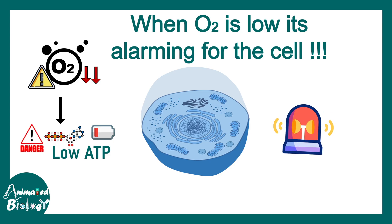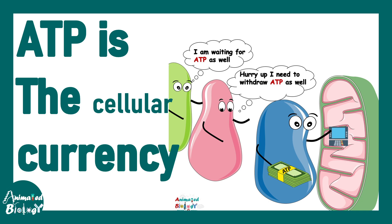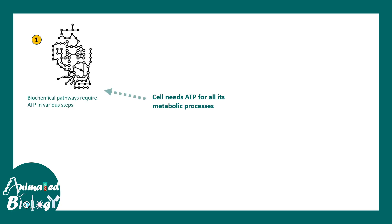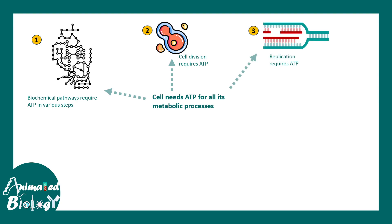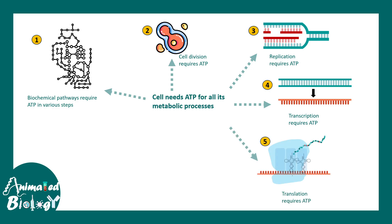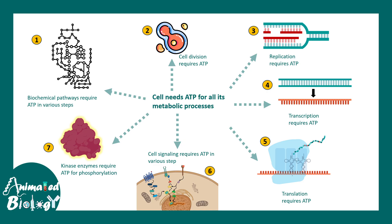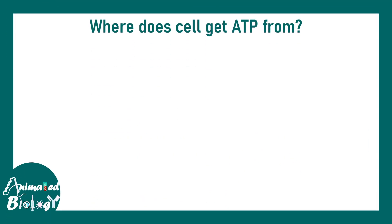ATP is the cellular currency. Each time any enzyme inside the cell wants to do something, ATP is required. Many biological processes require ATP — biochemical pathways, cell division, replication, transcription, and translation, which are crucial parts of the central dogma, all require ATP. Also, cell signaling pathways and kinase enzymes involved in signaling require ATP for proper activity.